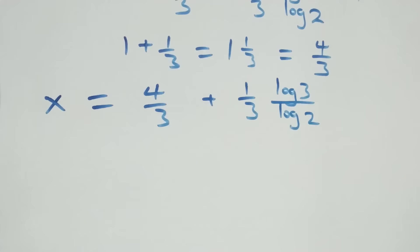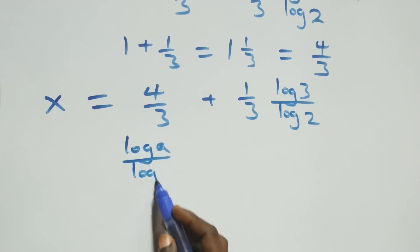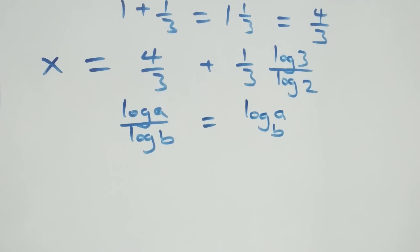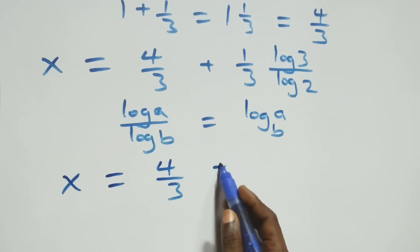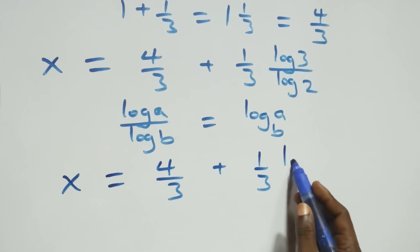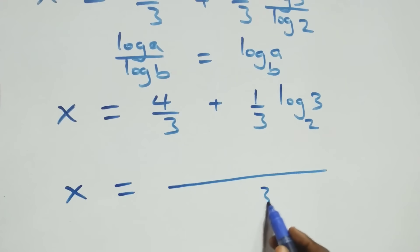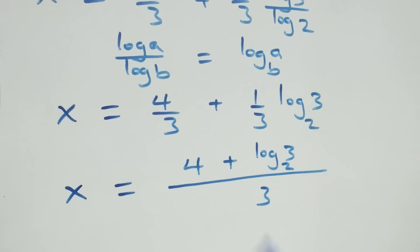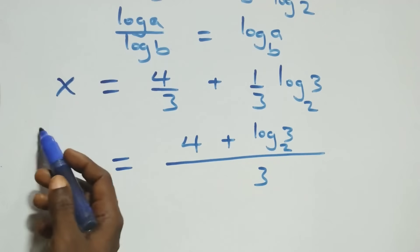Then here we apply the change of base formula. When we have log a over log b, it is the same thing as log a to base b. Then what we have here becomes x equals to 4 over 3 plus 1 over 3 · log 3 base 2. We can bring this together as one fraction: x equals to (4 + log₂3) all over 3. That is the value of x.